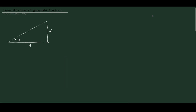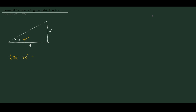Hello everyone. Let us have a brief review of inverse trigonometric functions. We have a right triangle with an unknown distance d, and our angle here is 30 degrees. In order to find d, we need to use tangent — so tangent 30 degrees equals opposite over adjacent, which is 5 over d.